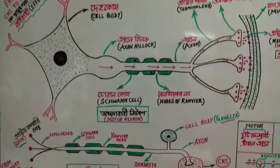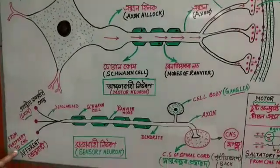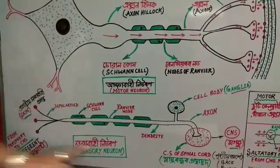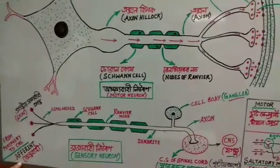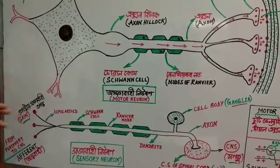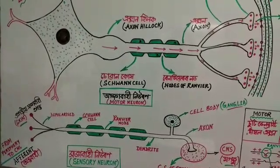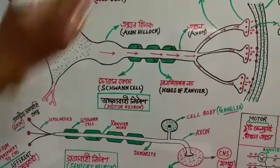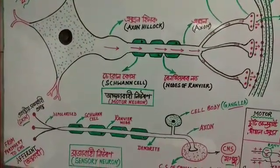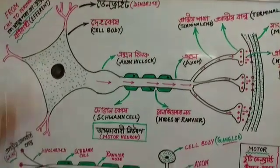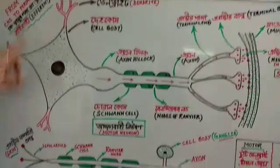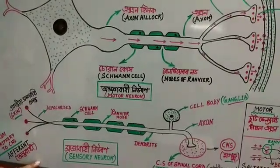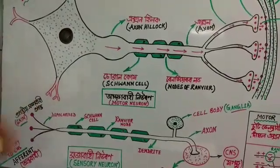Information travels from the periphery to the CNS — this means neurons acting in this direction are called afferent neurons. The motor neuron is an efferent neuron, meaning it carries information away from the CNS to the periphery. The afferent neuron carries signals toward the CNS.